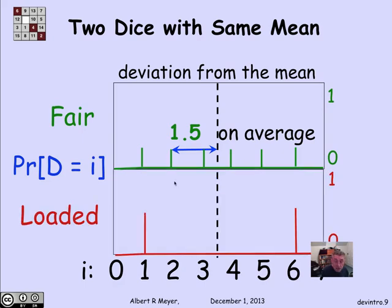On the other hand, for the loaded die, as we said, it's always exactly 2 and 1/2 from its expected value, which means its expected deviation is also 2 and 1/2.